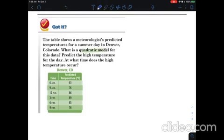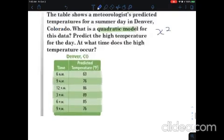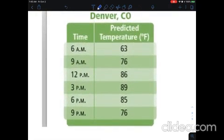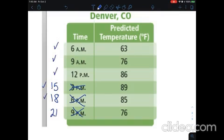So quadratic model simply means that we're going to have an x squared problem. So 6 a.m. is good, 9 a.m. is good, 12 p.m. is good. But when you put 3 in a calculator it's going to think you mean like 3 a.m. So we have to go to military time. We're going to be putting 15 in, military time again, 18, military time again if you go to like 9 p.m. is 21. So we have to put 6, 9, 12, 15, 18, 21 in our calculator.